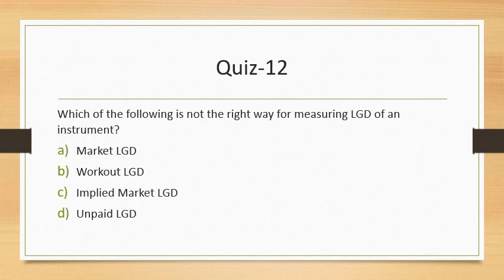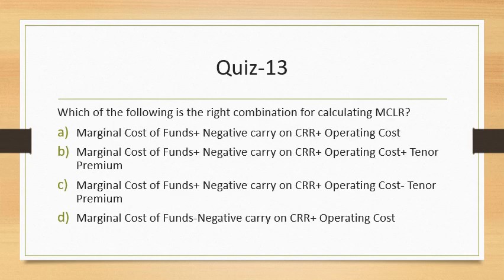Question 12: Which is not the right way for measuring LGD of an instrument? Market LGD, workout LGD, and implied LGD are all correct methods. However, there is no such thing as 'unpaid LGD', so that is the incorrect option. Question 13: Which combination is correct for calculating MCLR as per RBI? The factors are: marginal cost of funds, negative carry on CRR (banks earn no interest on CRR kept with RBI), operating cost, and tenor premium — all four together give the MCLR formula.